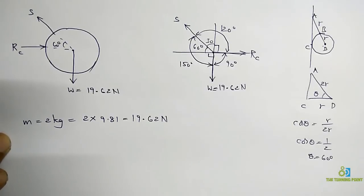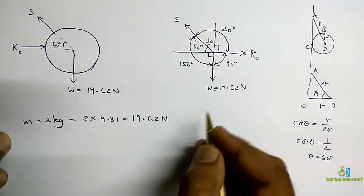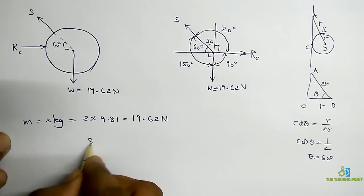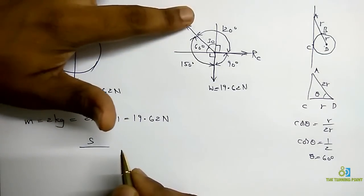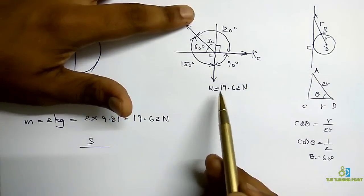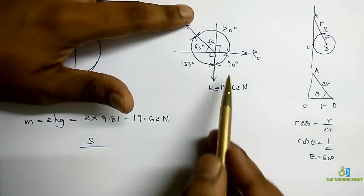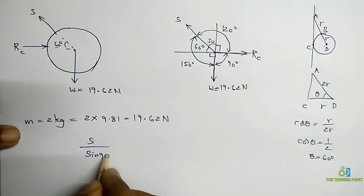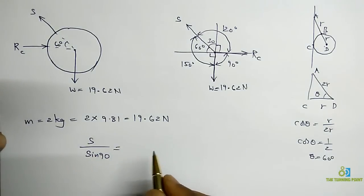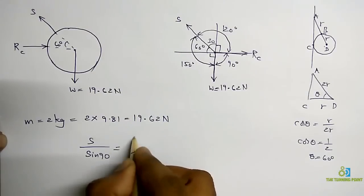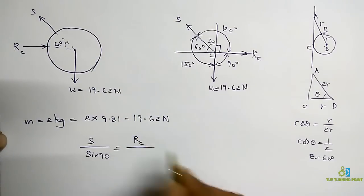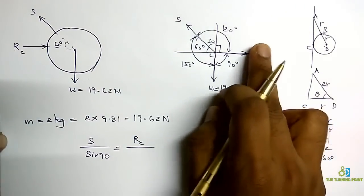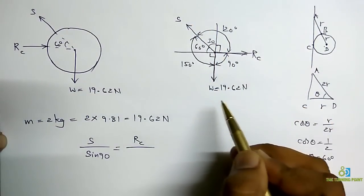So I can apply Lami's theorem here. So for application of Lami's theorem, opposite to S the angle between the remaining forces RC and W is 90 degrees. So S by sin 90 is equal to RC divided by sin 150 and the remaining two forces are at 19.62 divided by sin 120.